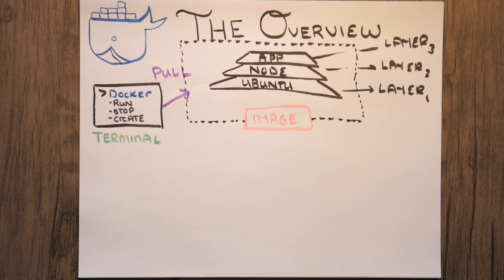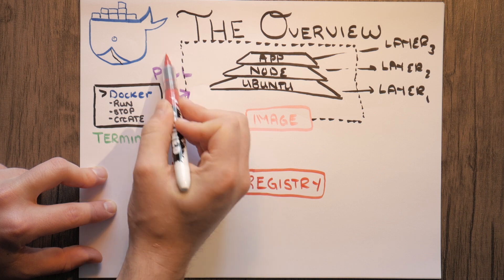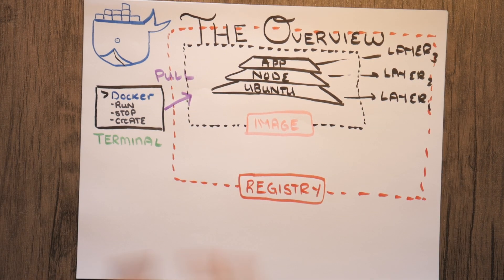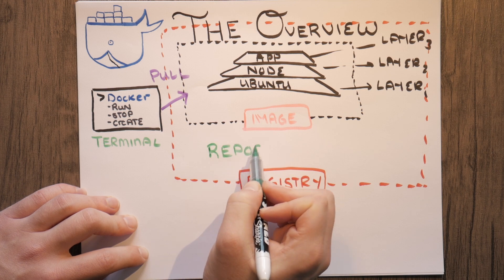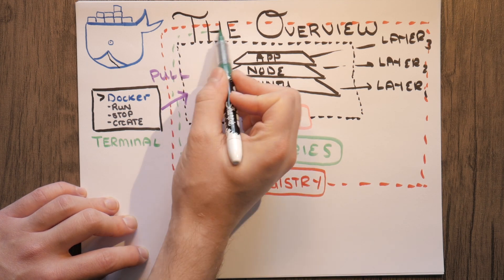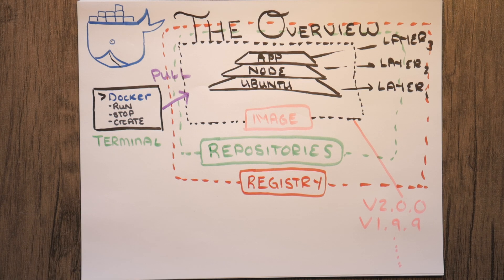Typically what we do with images is we pull them down from something known as a registry, and there are public and private registries. A very common public registry is Docker Hub, and they house all of these images that we can pull down to our local machine. Inside of the registry is a bunch of things known as repositories, and each of these repositories hold all of the different versions of the images. We can have an Ubuntu repository, Alpine, Node, Java — all these different repositories holding historical traces of images put up to the public registry.